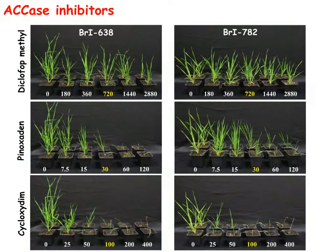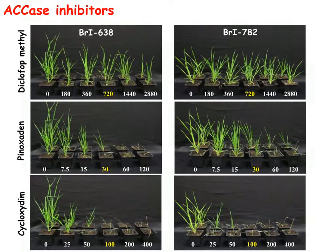Both accessions, the sensitive BRI-638 and the resistant BRI-782, showed high survival rates in response to diclofop-methyl. However, the resistant accession did not exhibit a 50% decrease in shoot fresh weight even under four times the recommended rate. Likewise, high survival was noted in response to phenoxidin application. Cycloxidin treatment resulted in significant reduction in fresh weight of both accessions.